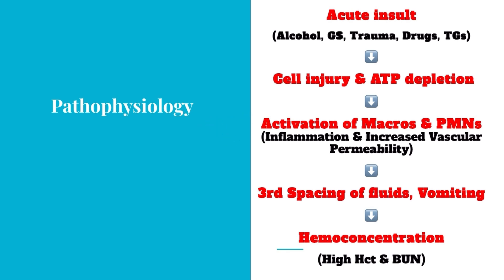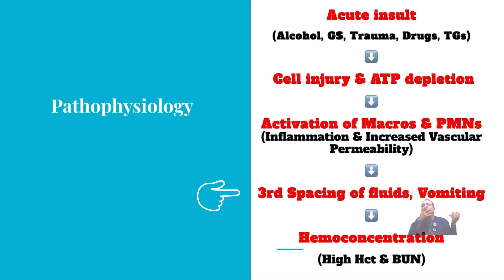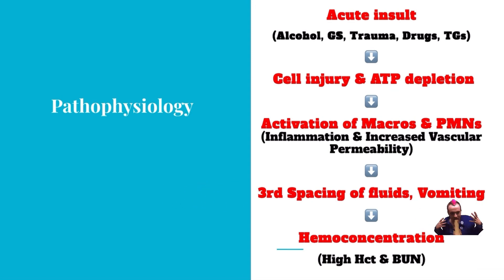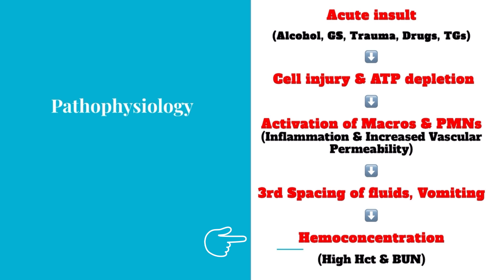Because of the increased vascular permeability, there is third spacing of fluids, and the patient also develops nausea and vomiting. This leads to hemoconcentration with high hematocrit and BUN levels.